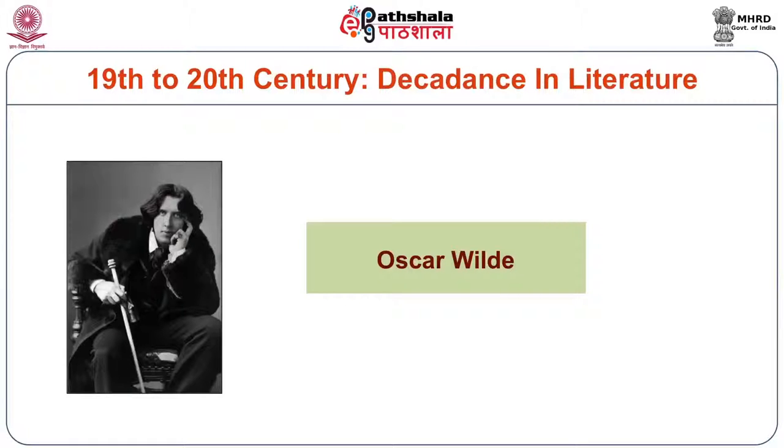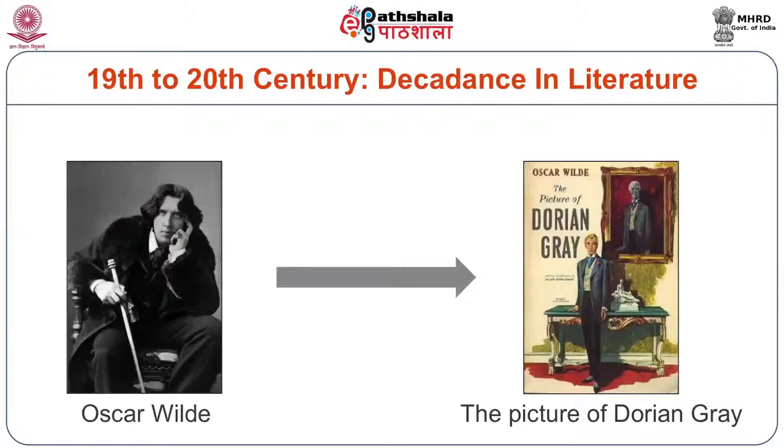Decadence literally means a process of falling away or decline. It signaled a set of interlinked qualities and alarmed those who valued traditional norms and values. It was seen as a kind of romanticism. There were painters and poets associated with this movement in the 19th century — Rossetti is one name that comes to mind. Another is Oscar Wilde, who wrote the novella The Picture of Dorian Gray, which distills the essence of the decadence movement — art for art's sake.